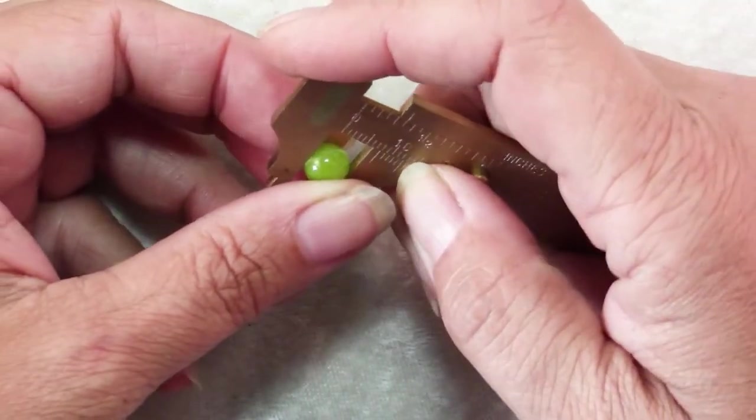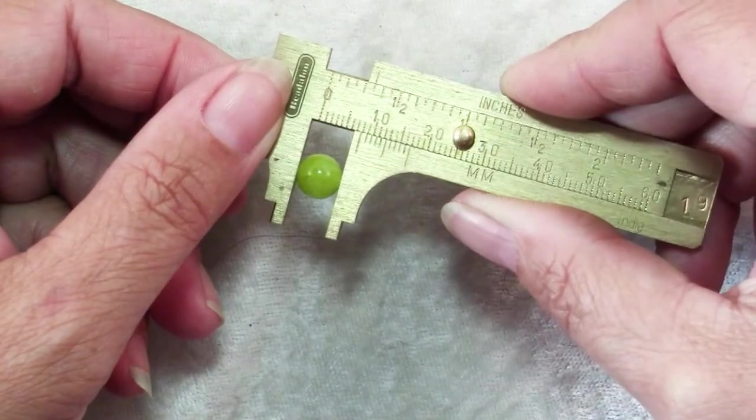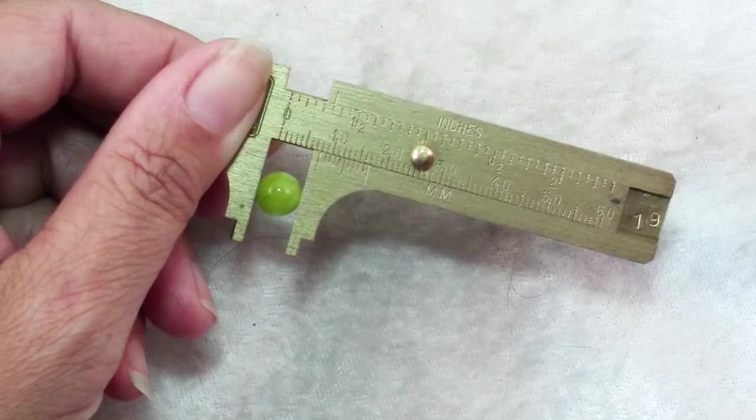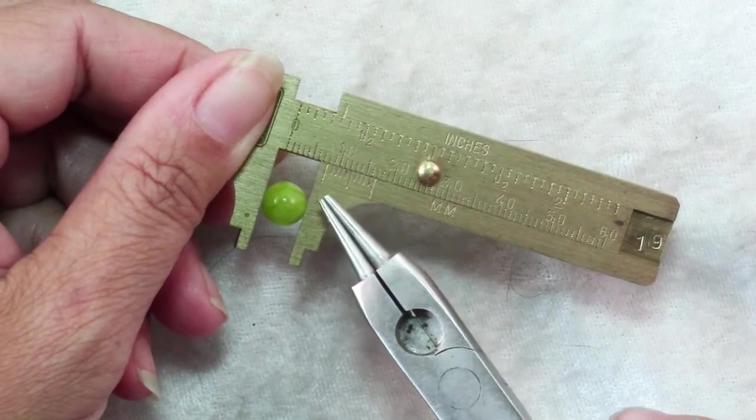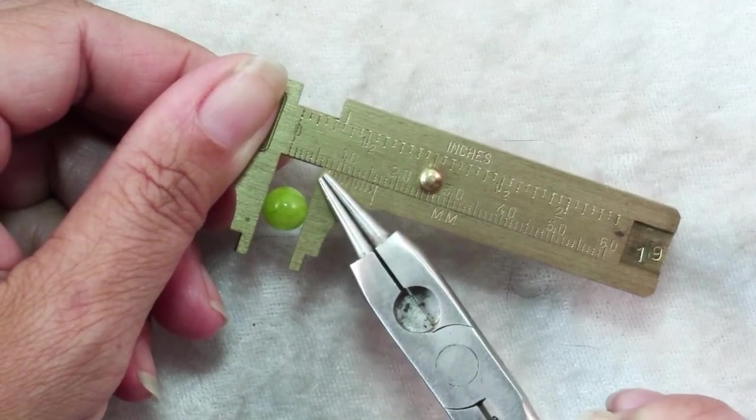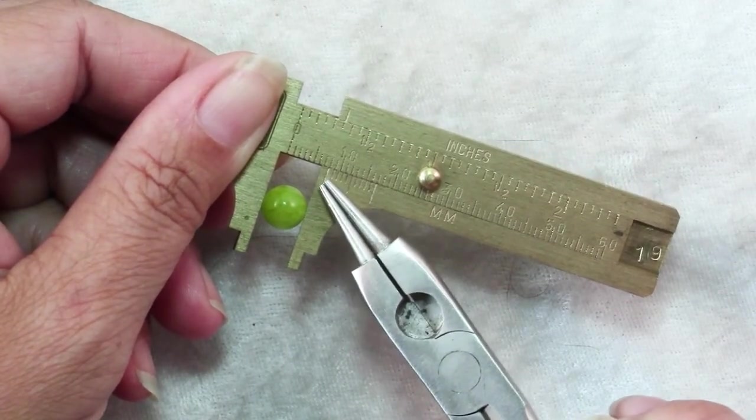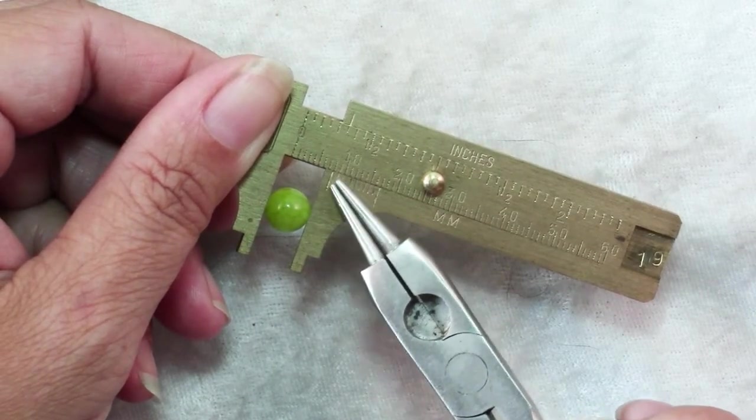You just slide a bead between the jaws and you can see your dimension. An important thing to note is that your measurement is from this scribed line, not from the edge of the caliper.